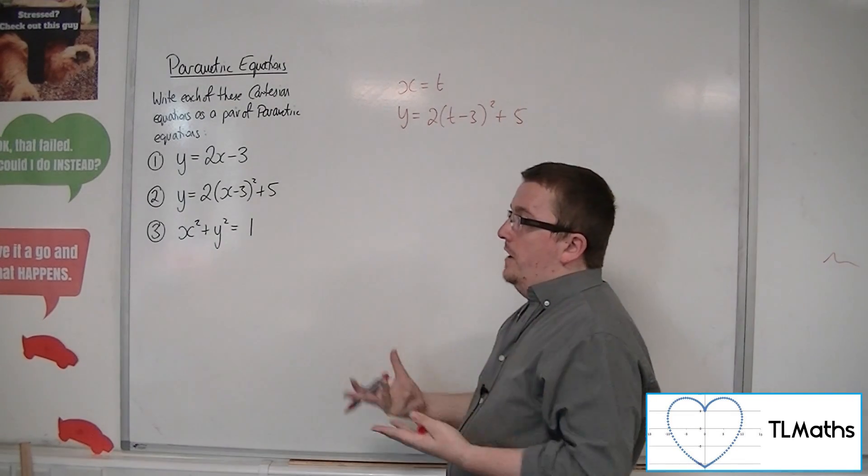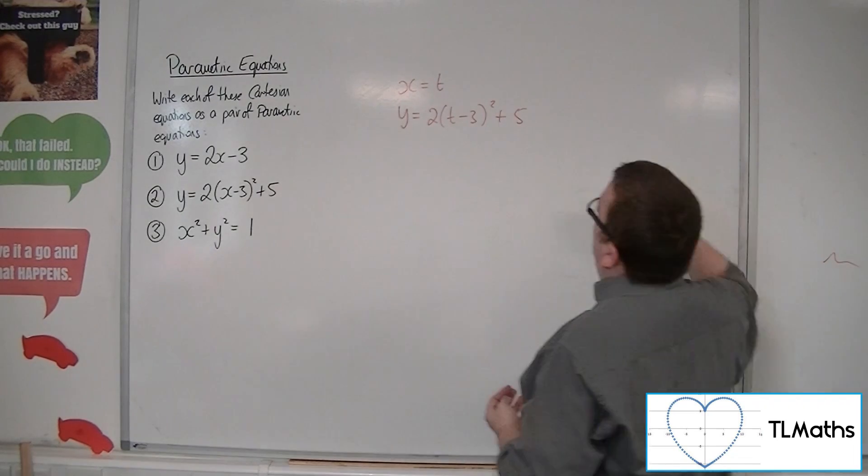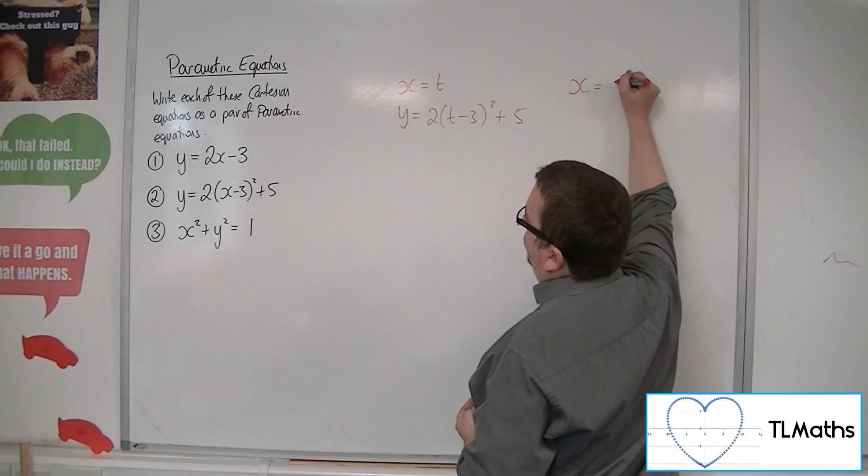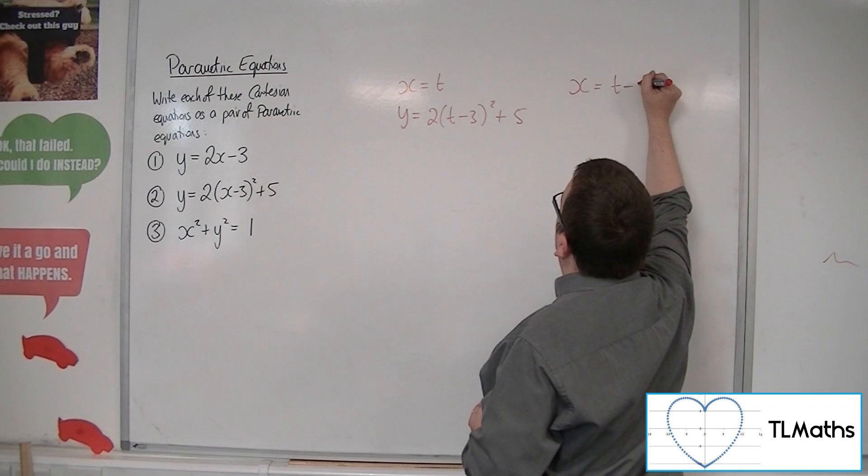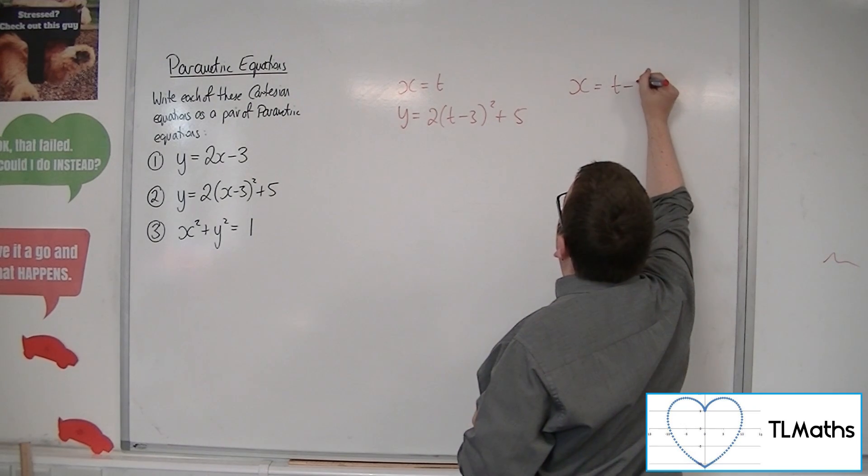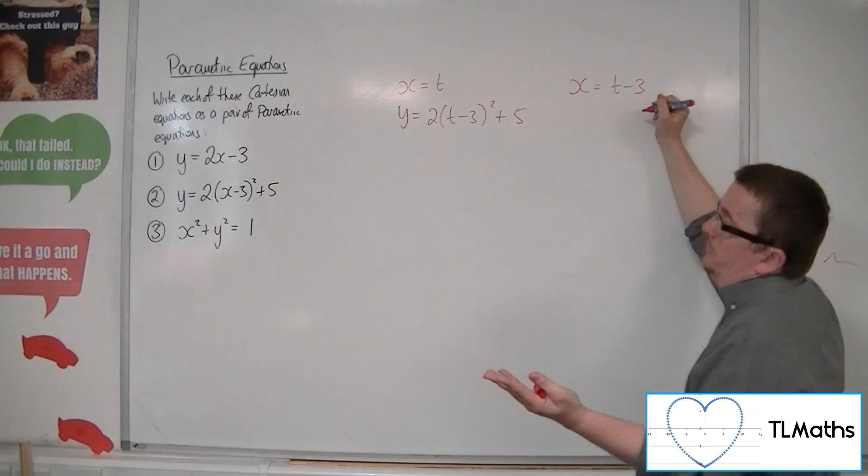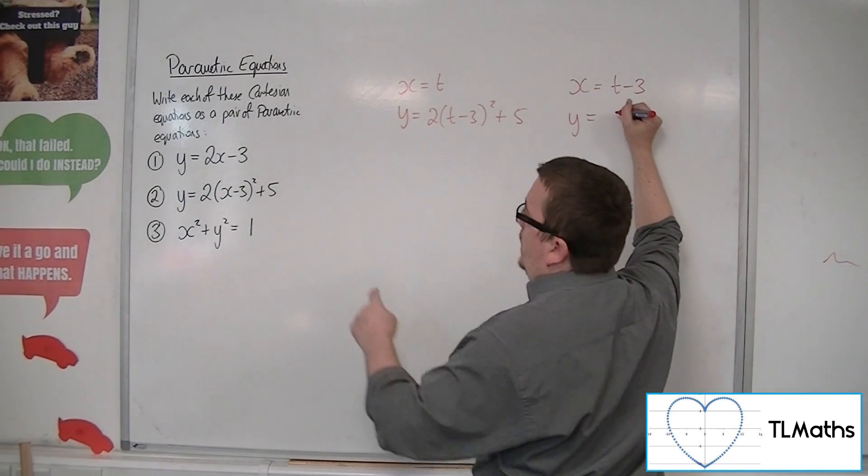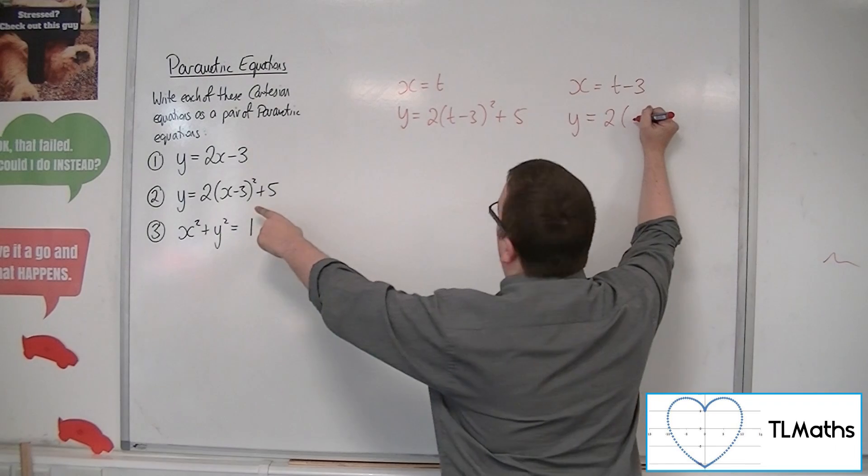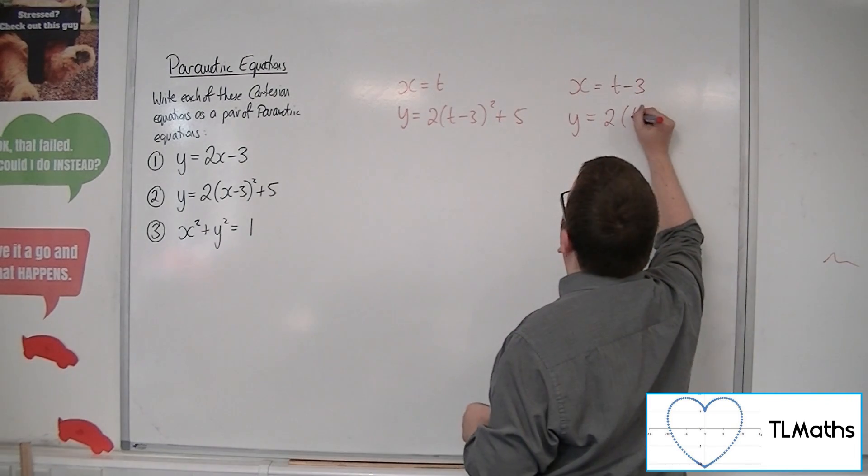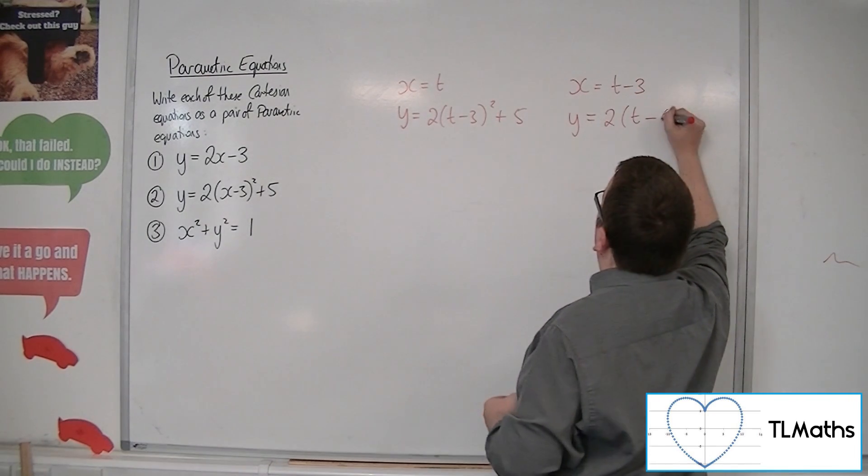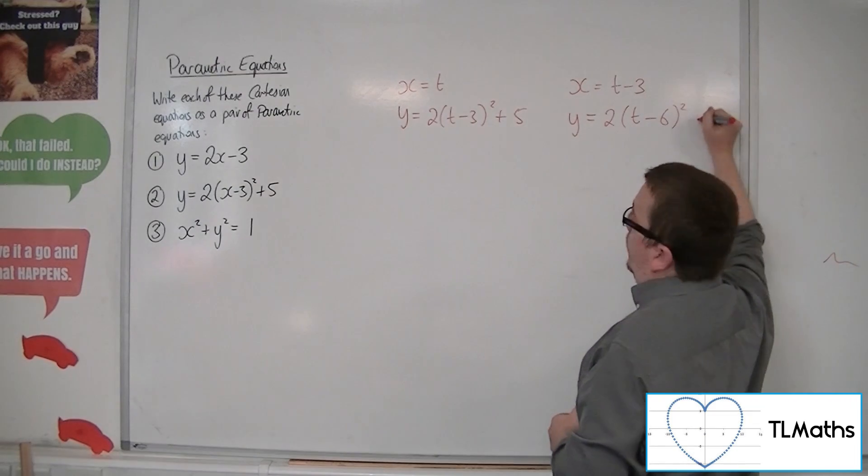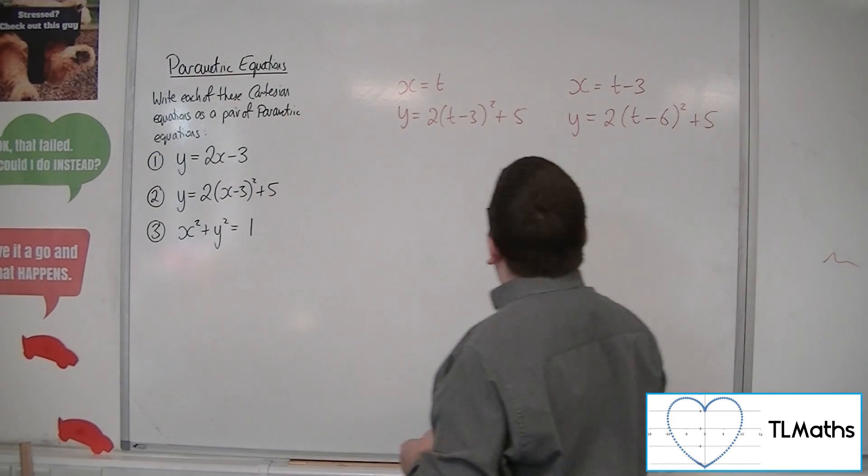Now, there are other things that you could have done. You could have said that actually x is equal to t minus 3, for example. So in that case, y would be equal to 2 lots of x, which is t minus 3. So t minus 3, take away 3, so take away 6 squared plus 5.